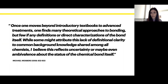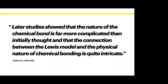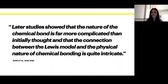This ambiguity is not only picked up by philosophers — you can also find it in classic science papers and very recent papers in chemistry journals. Chemists Zao and colleagues have written that later studies showed the nature of chemical bonding is far more complicated than initially thought, and that the connection between the Lewis model and the physical nature of chemical bonding is quite intricate. So this is an actual problem, not a made-up philosophical one — chemists themselves are very much concerned with what chemical bonds are.